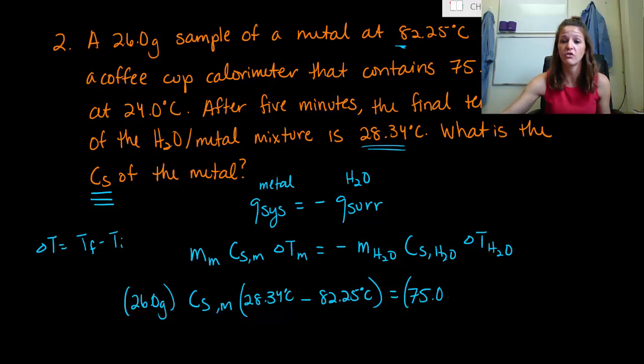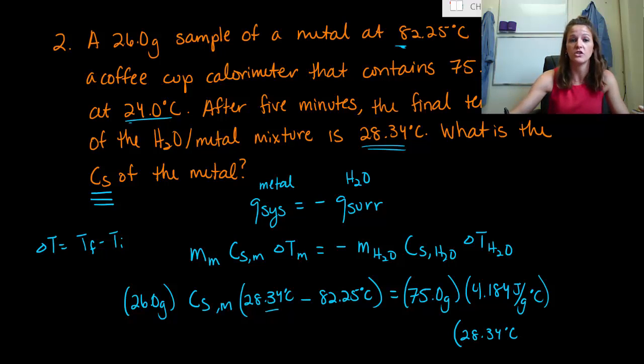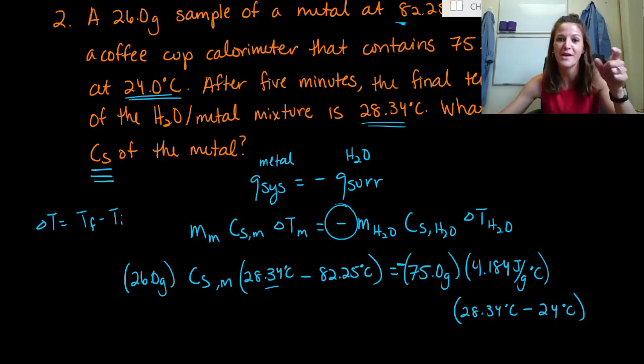Now we're going to move on to the water. We said that there are 75 grams of water. The specific heat of water was given in the previous problem, so we know it's 4.184 joules per gram degrees Celsius. That's never going to change. And then our change in temperature, I'm just going to rewrite it down here for space. So final minus initial. The final temperature is going to be the same for both, it is 28.34 degrees Celsius, but we know that our water actually started at 24 degrees Celsius. So we're going to be 28.34 minus our 24 degrees Celsius. So now hopefully the big thing and I did it. Oh my God, I did it. I dropped my negative sign. You cannot drop that.